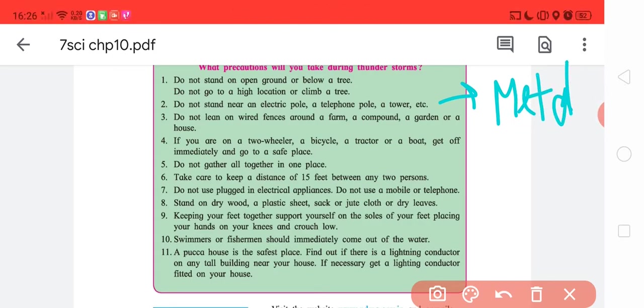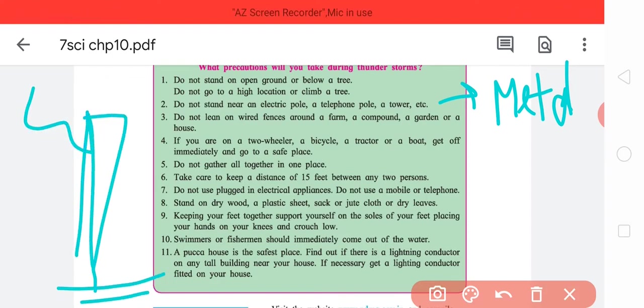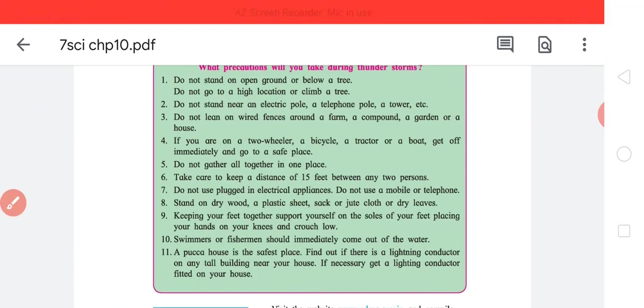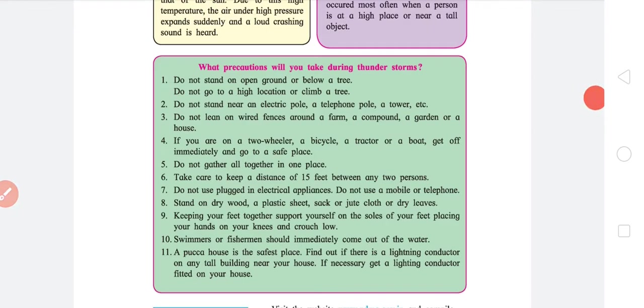Do not stand near an electric pole, a telephone pole, a tower, etc., because they are made up of metal. As you may have seen, metals are really good electricity conductors. This is a metal pole, the lightning strikes and the whole metal conducts it to the ground. So never stand on metal. Do not lean on wire fences around a farm, a compound, a garden, or a house. Similarly, wired fences, because the wires are made of metals and they tend to conduct. Fourth, if you're on a two-wheeler, a bicycle, a tractor, or a boat, get off immediately and go to a safe place. Basically any open place is an issue for you. Find shelter somewhere.